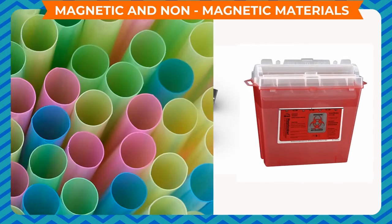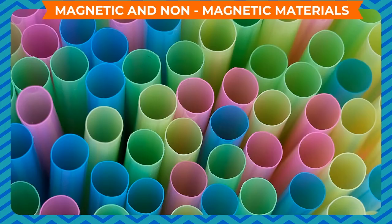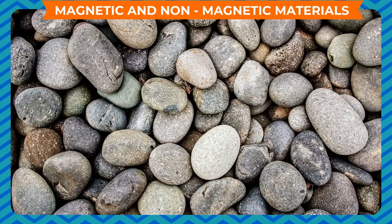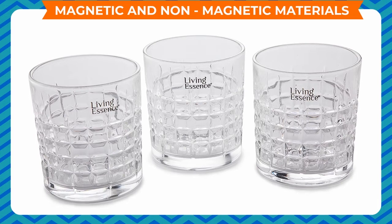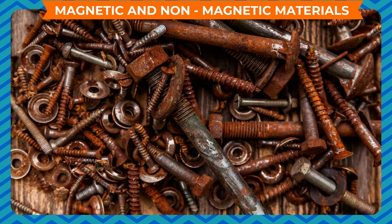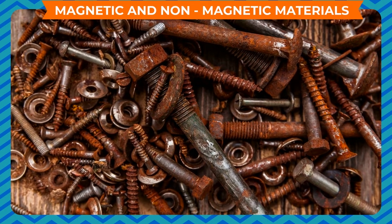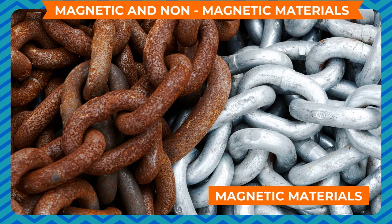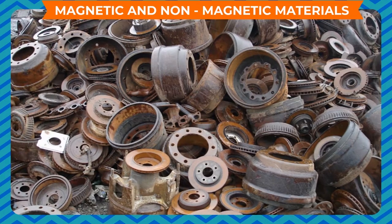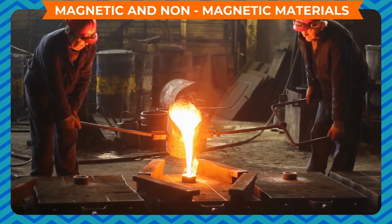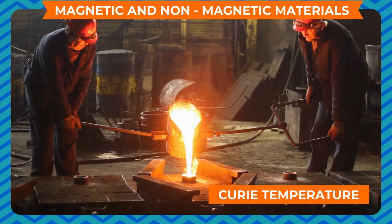For example, plastic materials, non-ferrous metals, soil, rocks, wood, glass, etc. Iron is a soft metal in its purest form. It is considered a magnetic material but it loses its magnetic behavior when heated above a certain temperature called the Curie temperature.